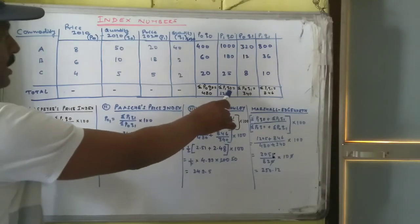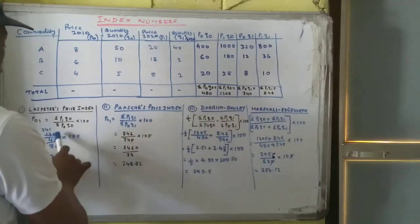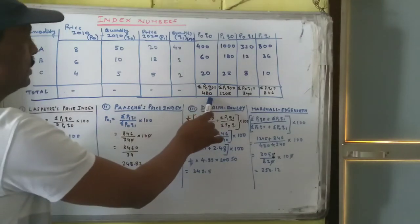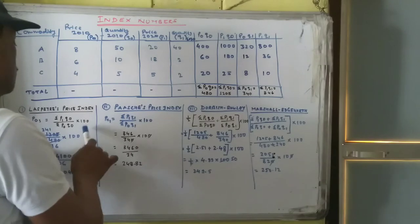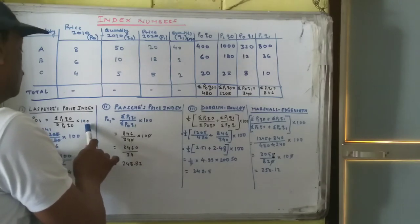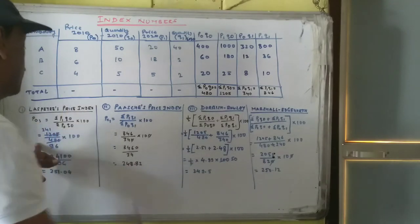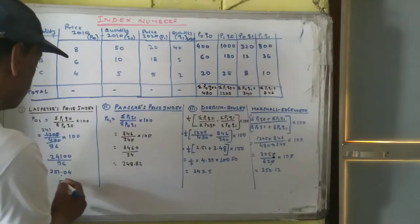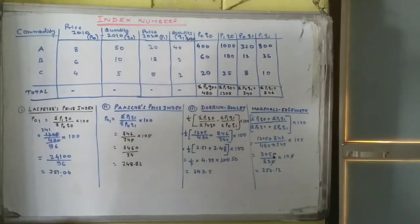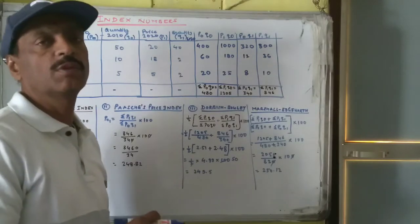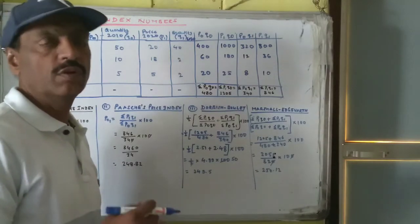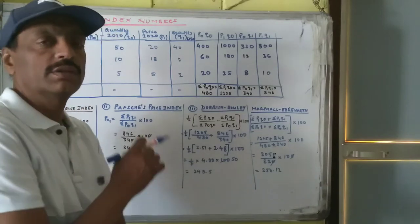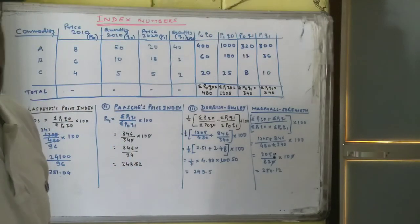So sum of P1Q0, just look here, 1205. P0Q0 is 480, and multiplied by 100. After getting the calculation, you will get this. So calculation is the vital thing in such type of questions. If you want to solve this correctly, your calculation should be correct. Otherwise, your answer will be wrong.